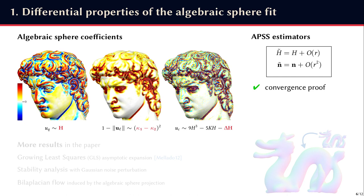If we look at the APSS estimators tilde n and tilde h, we obtain proofs that they converge well toward their theoretical values when the neighborhood size tends toward zero.